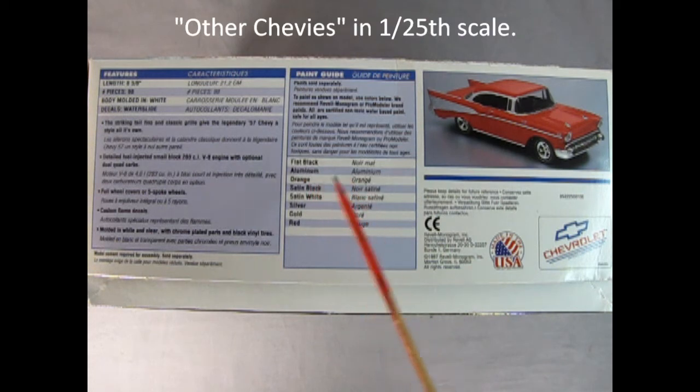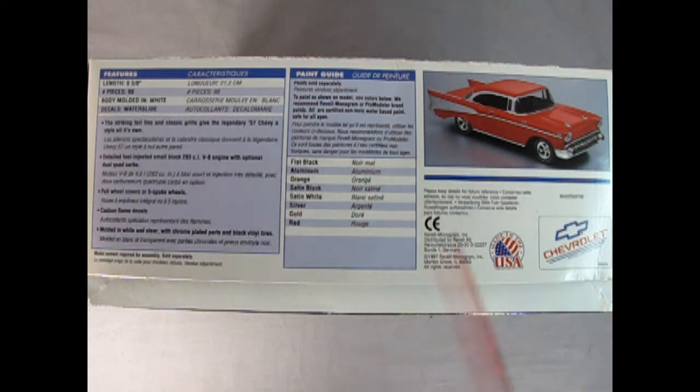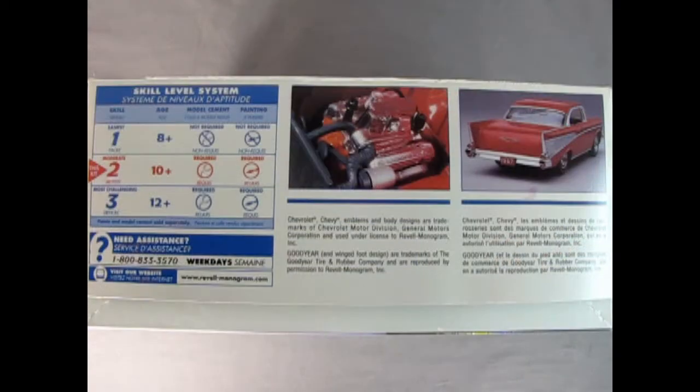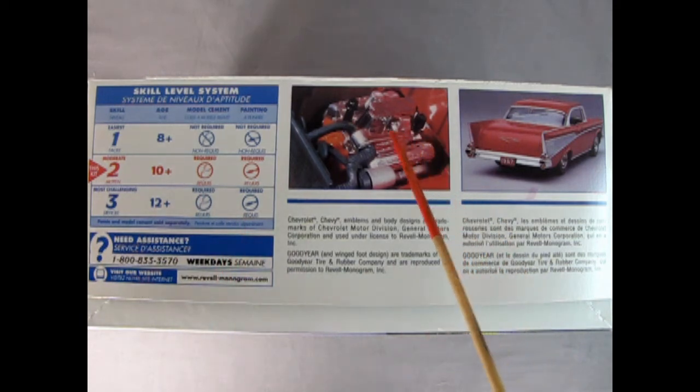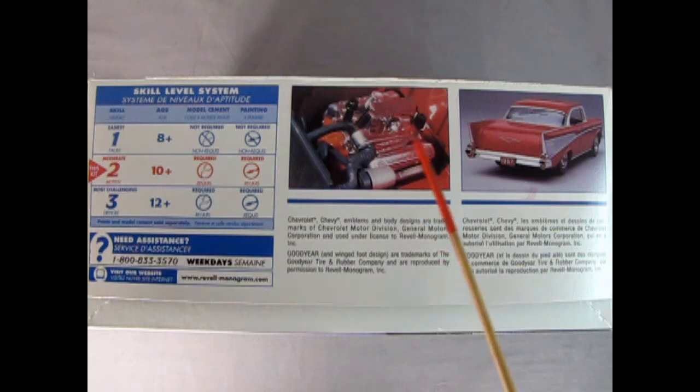It's got flat black paint, aluminum, orange, satin black, satin white, silver, gold and red - those are the colors we need to paint it, which doesn't have these in the box. This is a skill level 2 kit for ages 10 and up. Glue and painting are required. There's that nice 1957 fuel injected Chevy motor, the first year for this actual engine, and a nice rear three-quarter shot of the back.